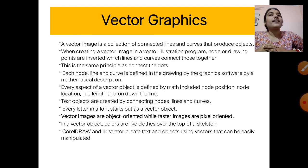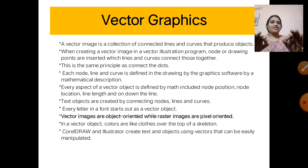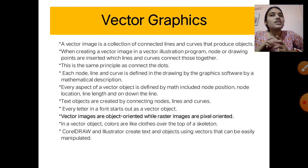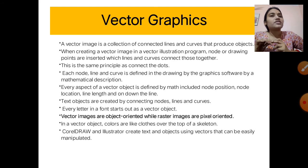In a vector object, colors are like clothes over the top of a skeleton — you cover a shape with color and it looks that way. Corel Draw and Adobe Illustrator create text and objects using vector graphics that can be easily manipulated. These are two software examples used in vector graphics, though other software exists as well.